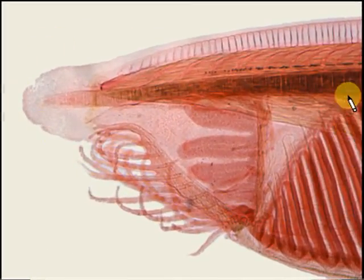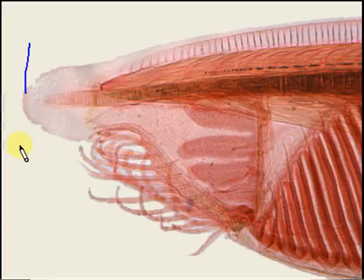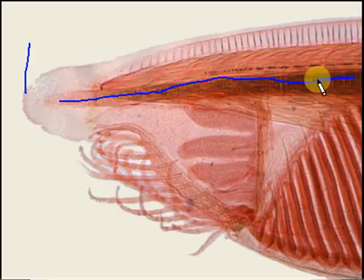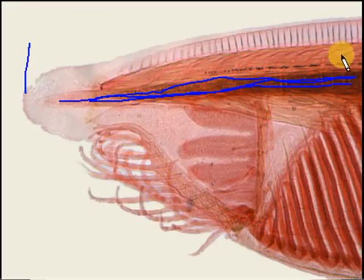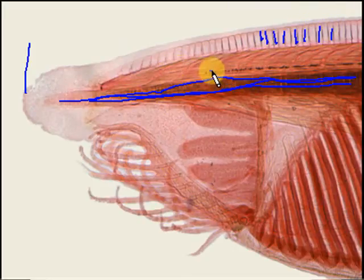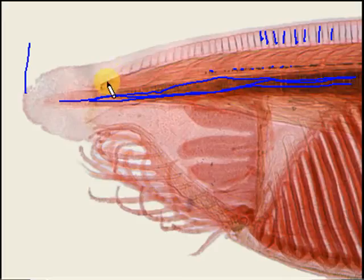This is the anterior view of amphioxus. The most anterior part is the rostrum. Below the rostrum is your notochord, and above that is the dorsal hollow nerve cord. This is the median dorsal fin, which has fin rays — those lines right there. These very dark black spots are the ocelli, and the most anterior one is your eye spot.